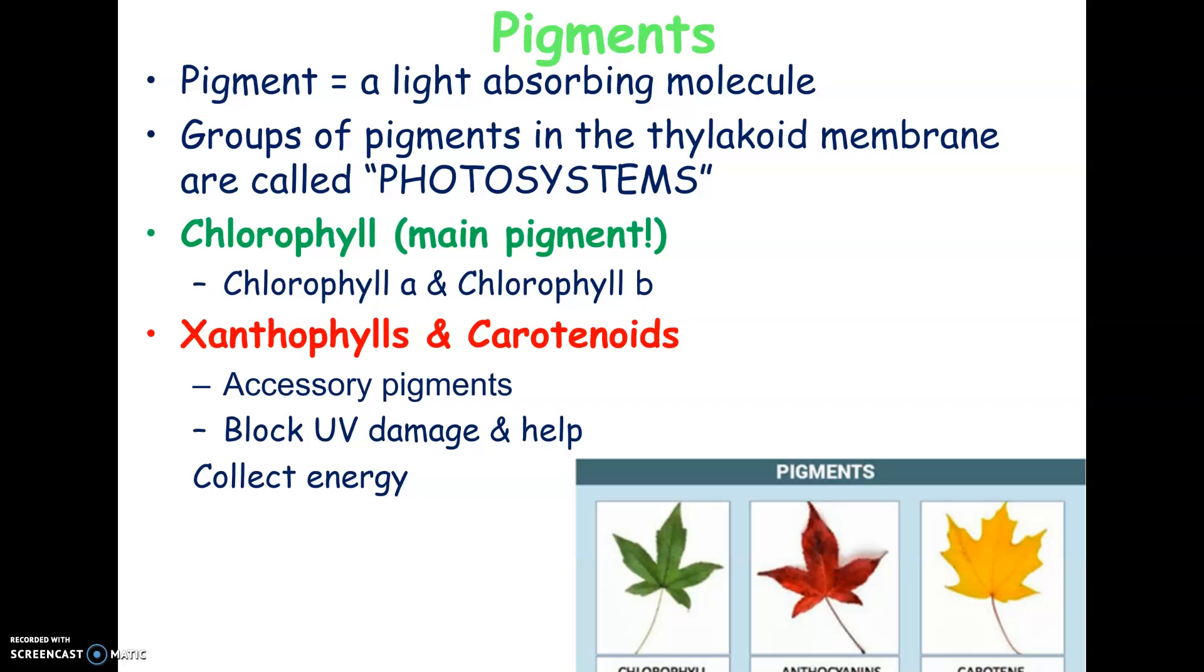And then you have what are called accessory pigments, which are xanthophylls and carotenoids. And these are the kind of the yellows and the reds that you see in the fall. They're there all the time, but you don't really see them until the fall when the chloroplasts sort of shut down in the leaves. And then since there's not making chlorophyll anymore, you see those underlying pigments. And they don't really conduct photosynthesis.